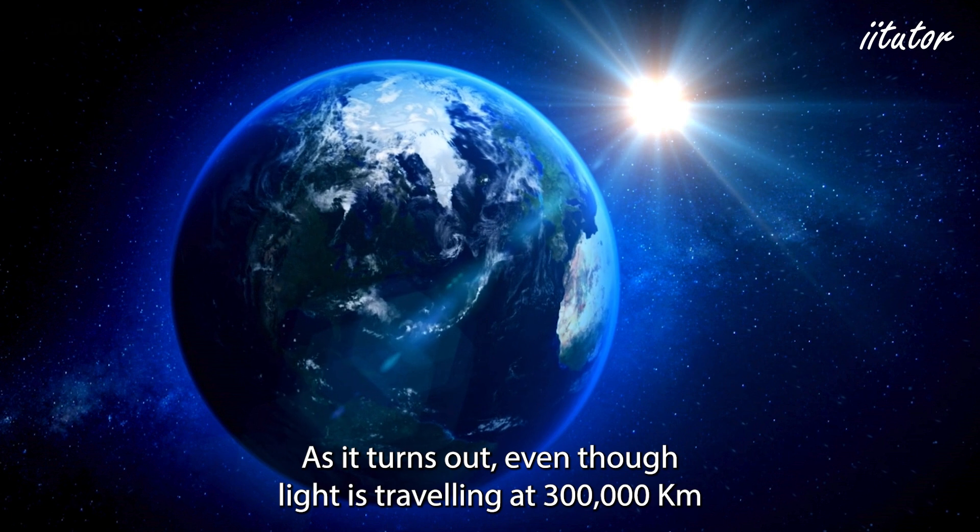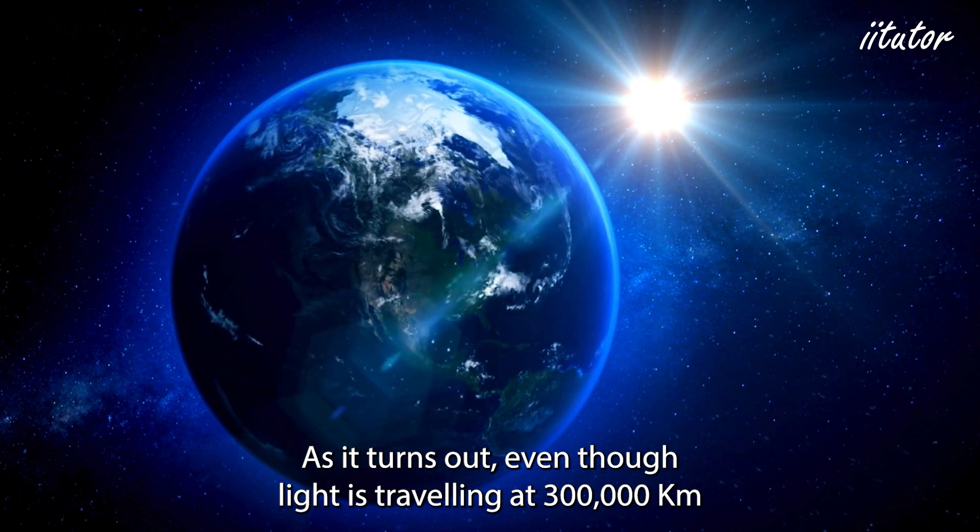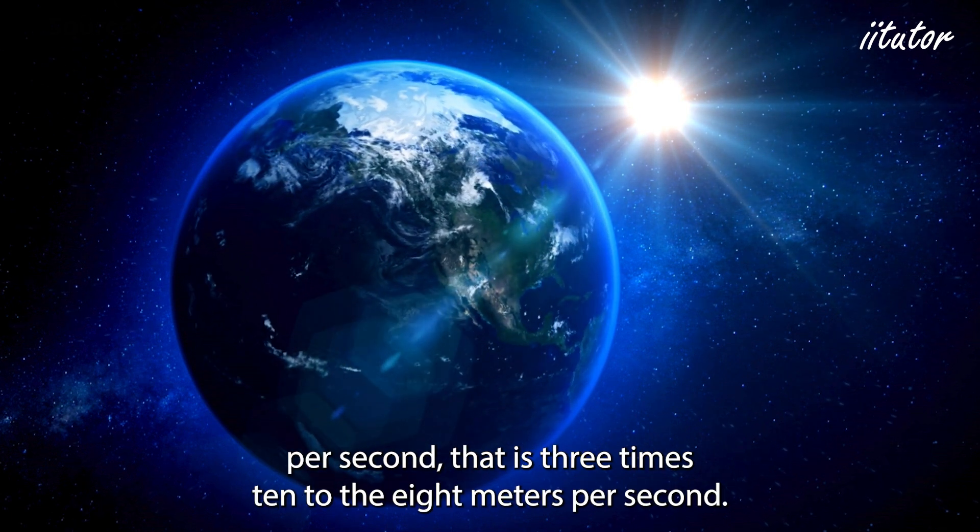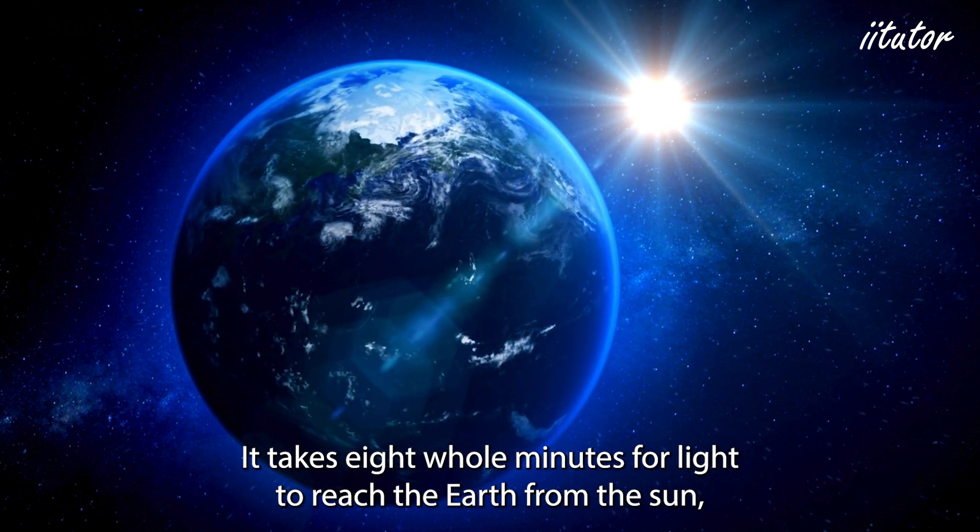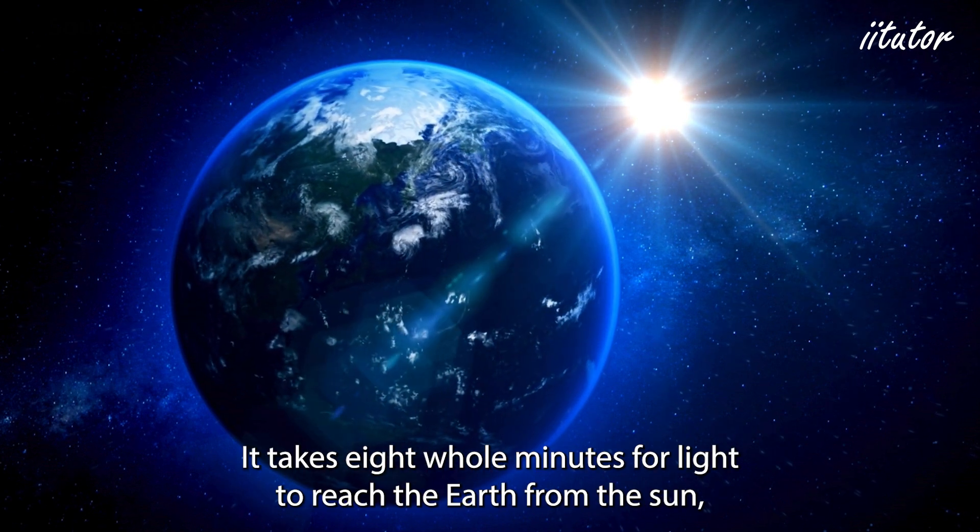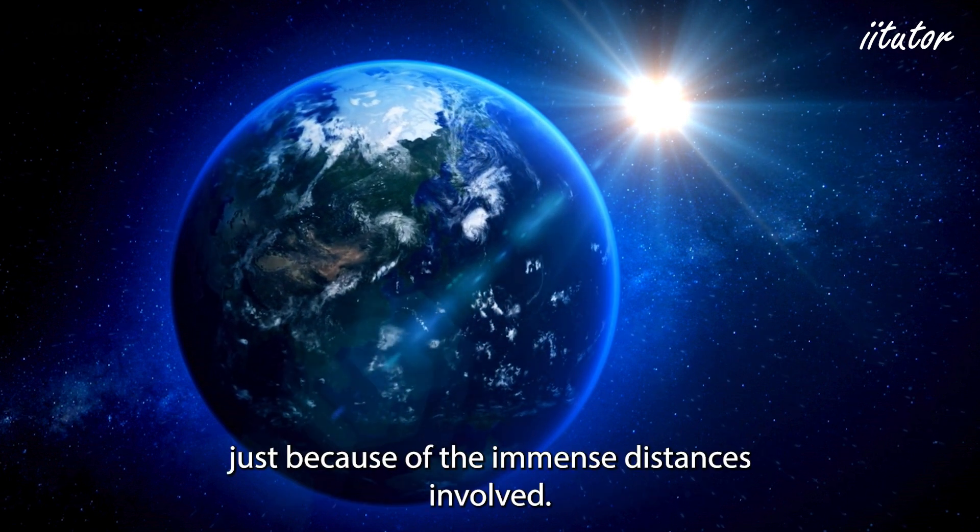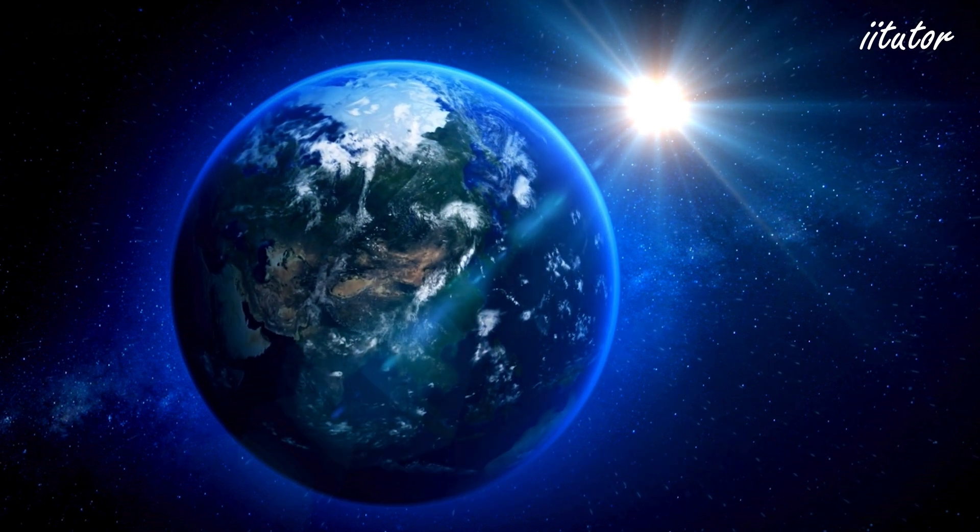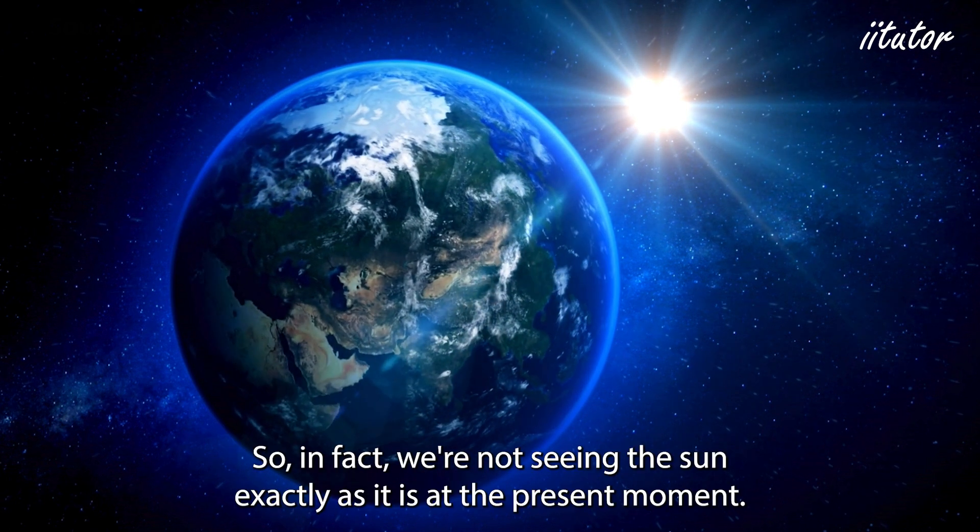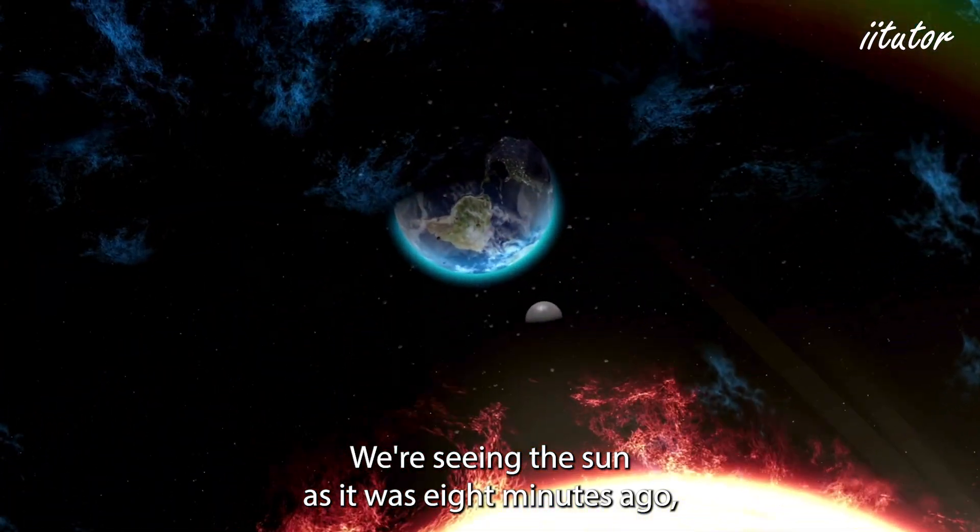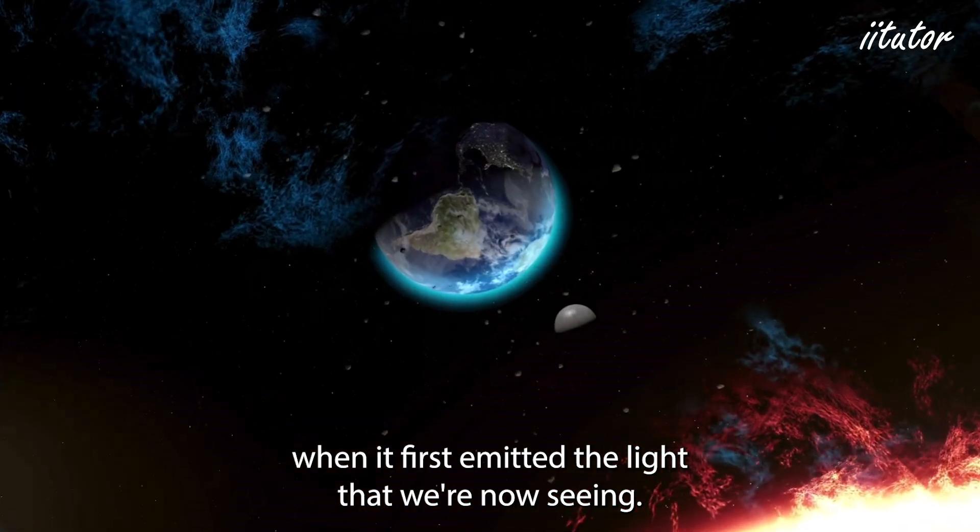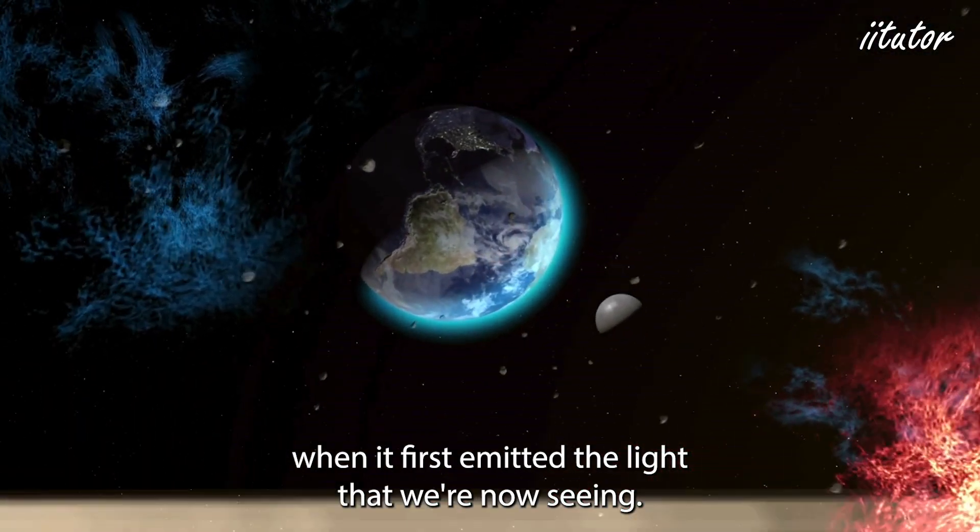As it turns out even though light is traveling at 300,000 kilometers per second, that is 3 times 10 to the 8 meters per second, it takes 8 whole minutes for light to reach the Earth from the Sun just because of the immense distances involved. So in fact we're not seeing the Sun exactly as it is at the present moment. We're seeing the Sun as it was eight minutes ago when it first emitted the light that we're now seeing.